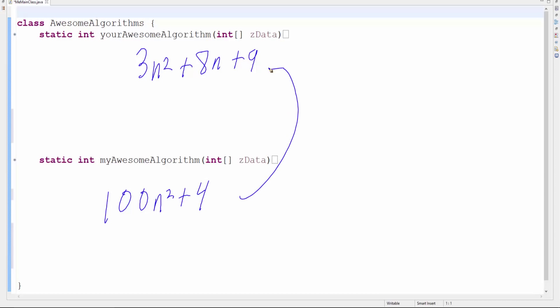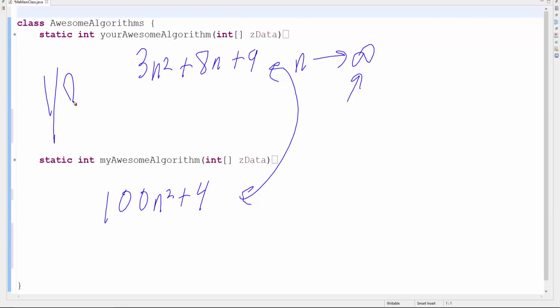We do the same with my algorithm. We find out that my algorithm is 100n² + 4. Now, just looking at these two functions, which one of these algorithms do we want to use in the long run? As n gets really big, n approaches infinity, meaning huge data set here. As n gets really big, which one of these algorithms do we want to choose? Pause the video and tell me in the comments, which algorithm do we want to use? Do we want to use yours because you're awesome? Or do we want to use mine because I'm awesome? Who's awesomer?